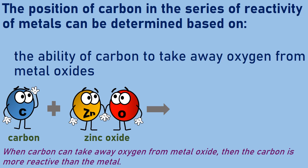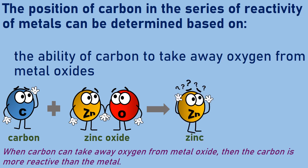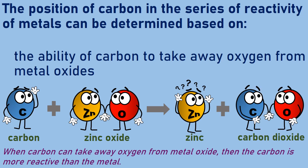It is useful to place carbon and hydrogen into the reactivity series of metals because these elements can be used to extract metals. For this time being, let us focus on carbon first. The position of carbon in the series can be determined based on the ability of carbon to take away oxygen from metal oxides. When carbon reacts with zinc oxide, carbon removes oxygen from zinc oxide to form zinc and carbon dioxide. When carbon can take away oxygen from a metal oxide, then carbon is more reactive than that metal. Hence, carbon is more reactive than zinc.